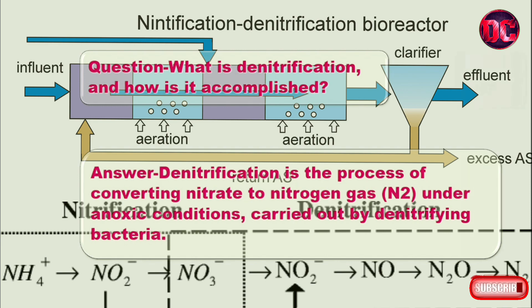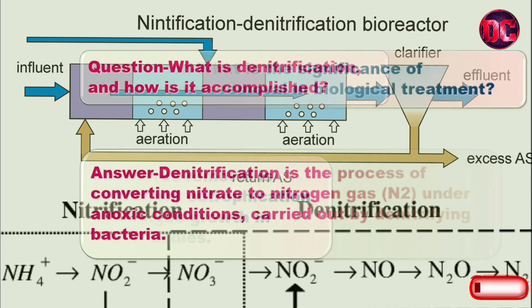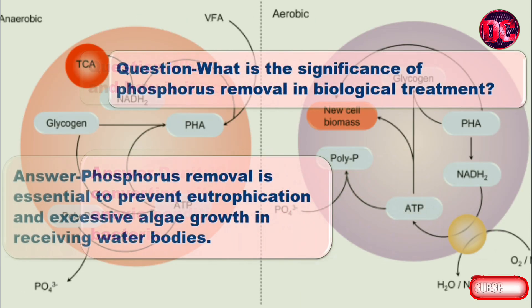Question: What is the significance of phosphorus removal in biological treatment? Answer: Phosphorus removal is essential to prevent eutrophication and excessive algae growth in receiving water bodies.